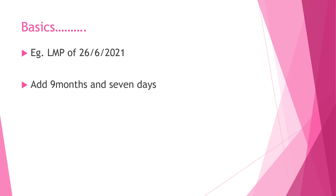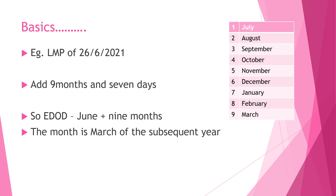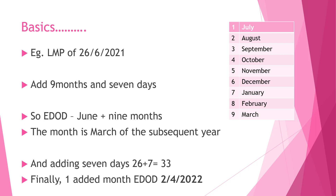Let's take another example with LMP of 26th June 2021. Adding 9 months gives March again. Adding 7 days to 26 gives 33, but March only has 31 days. Subtracting 31 from 33 leaves 2 extra days, so we carry over to the next month — the EDOD becomes 2nd of April 2022.